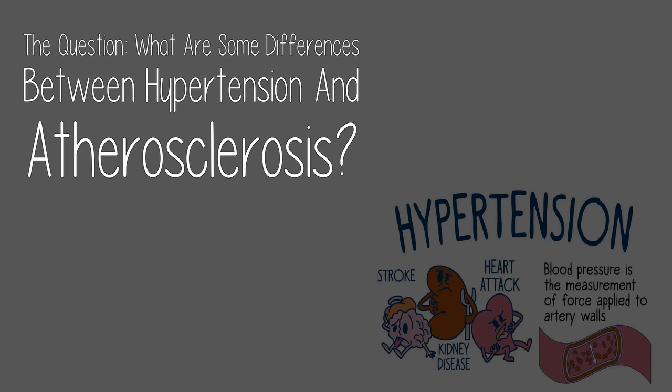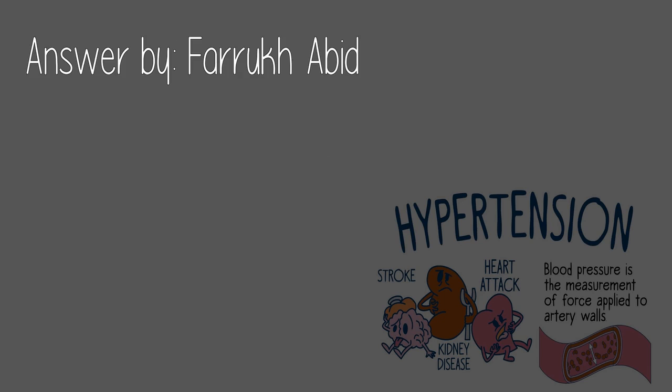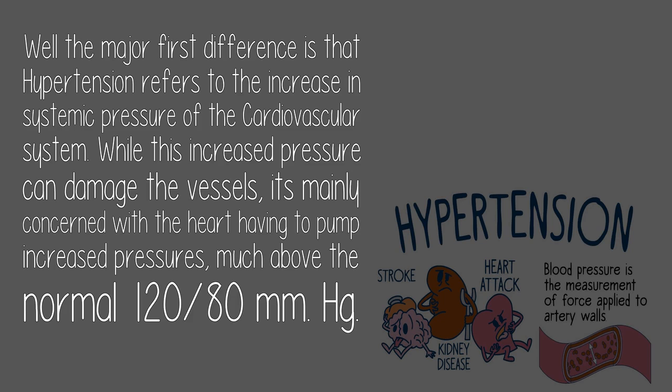What are some differences between hypertension and atherosclerosis? The major first difference is that hypertension refers to the increase in systemic pressure of the cardiovascular system. While this increased pressure can damage the vessels, it's mainly concerned with the heart having to pump increased pressures, much above the normal 120/80 mmHg.